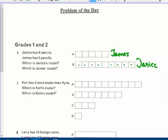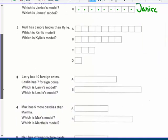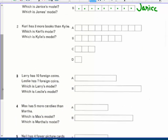That simple. Taking a rectangle and cutting it into equal parts. Carl has three more books than Kylie, which is Carl's model, which is Kylie's model? Well, which one is three bigger than the other one? D compared to C, that's two bigger. C compared to B, that's four bigger. These four here, right? So that's not it.